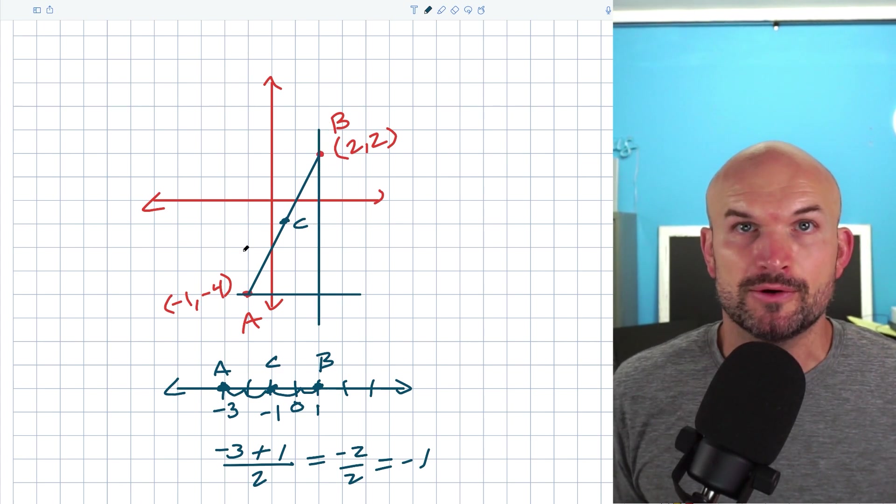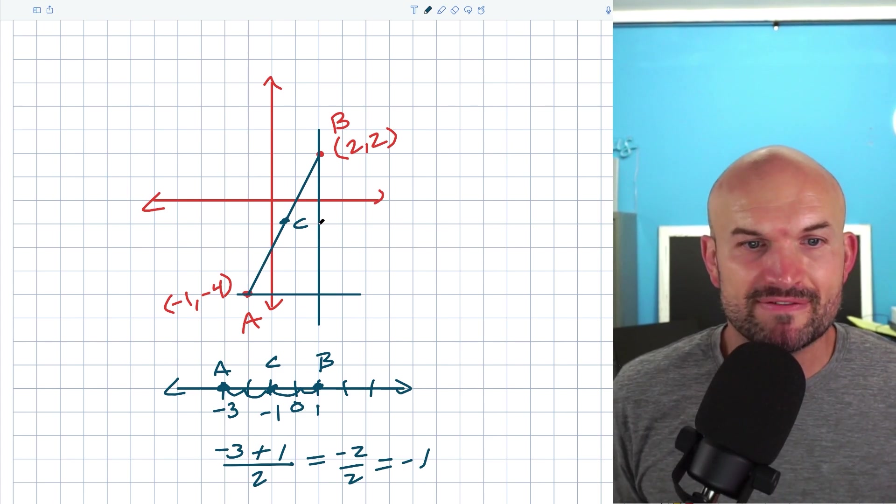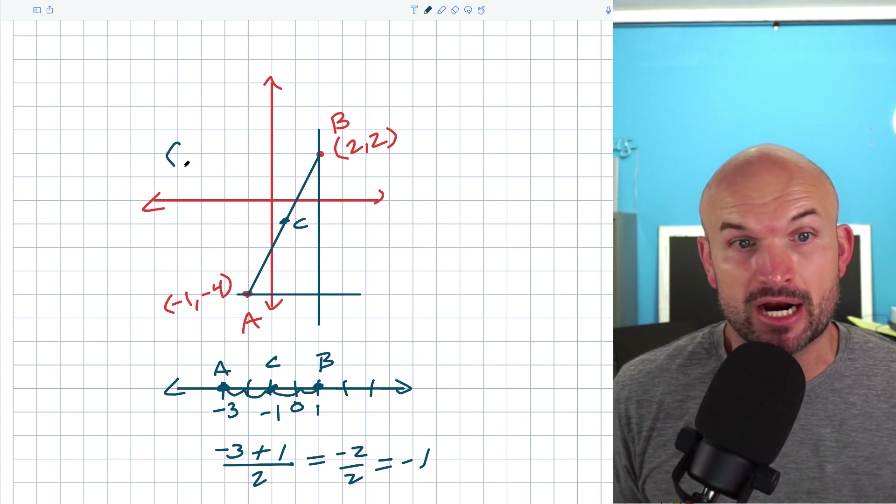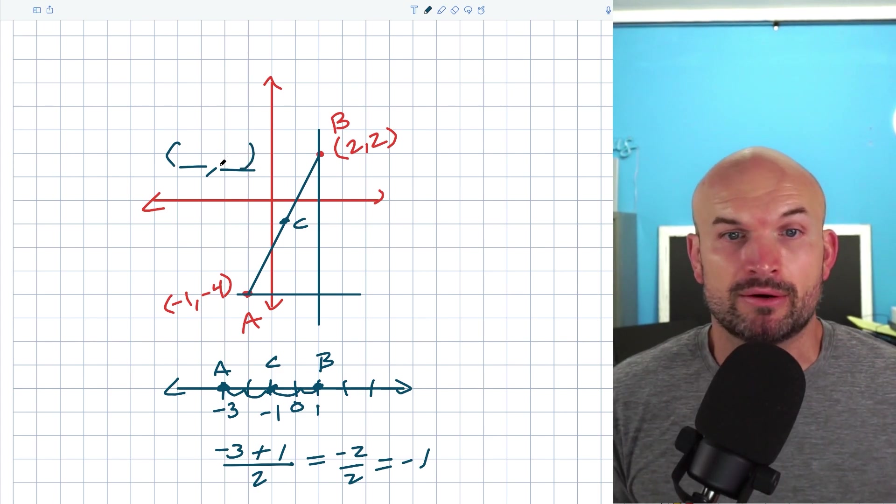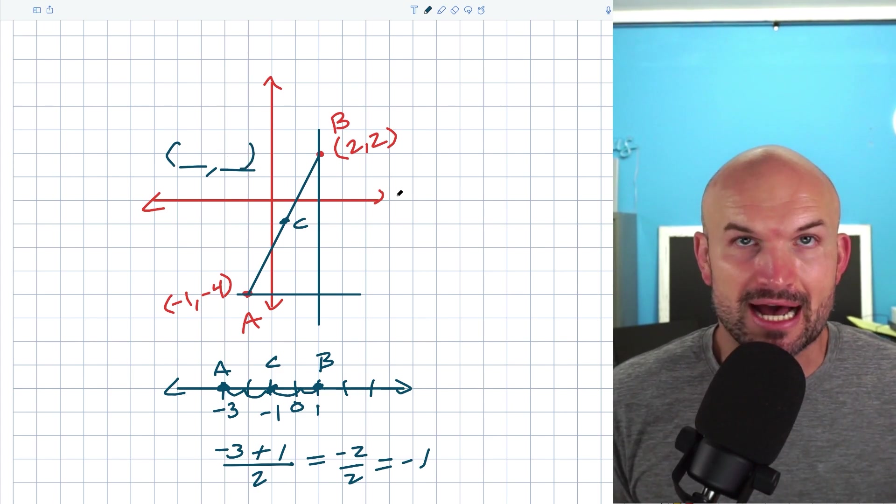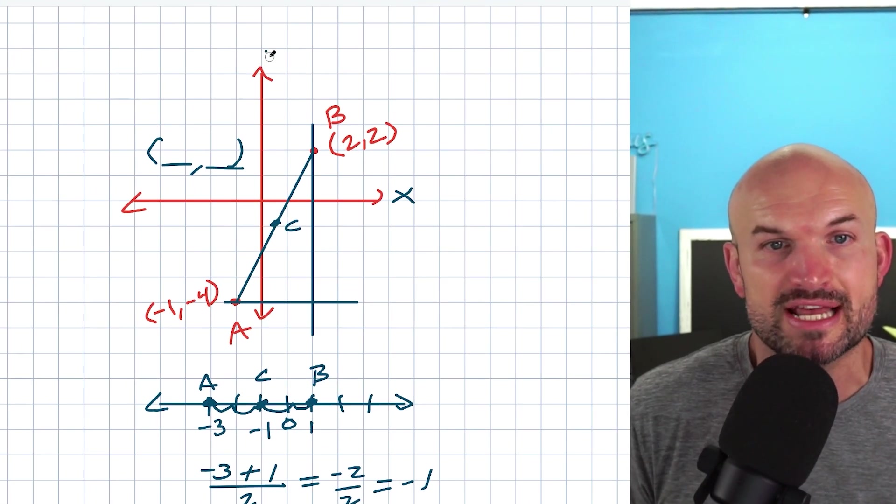So basically what we want to do is when we want to find the midpoint, we want to find the horizontal distance, which is going to be our X coordinate. And then we want to find the vertical distance, which is going to be our Y coordinate. Because remember, every coordinate point on the coordinate grid has an X as well as a Y coordinate.